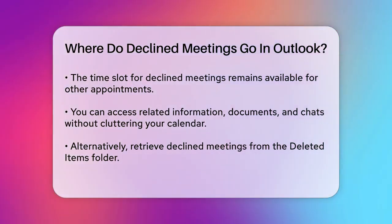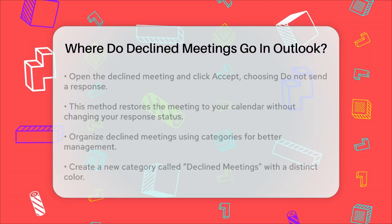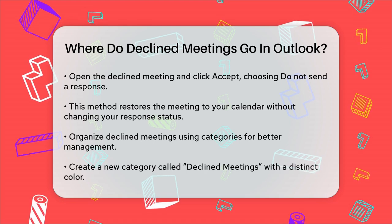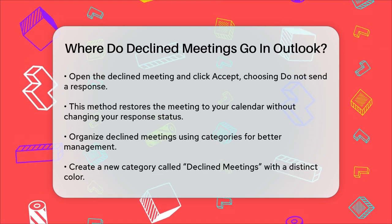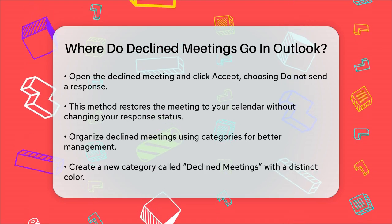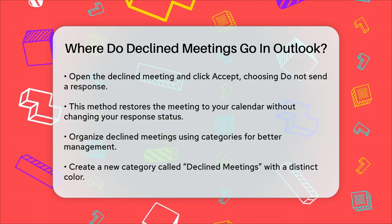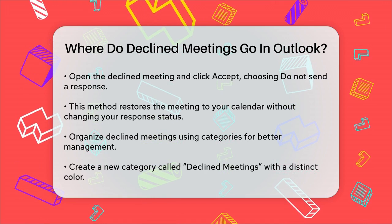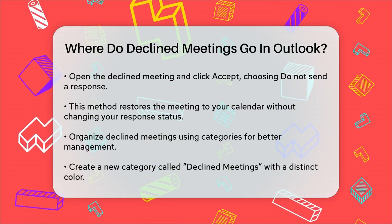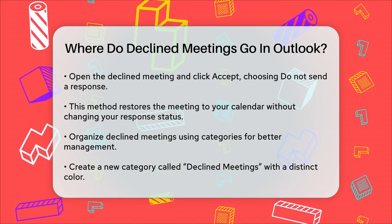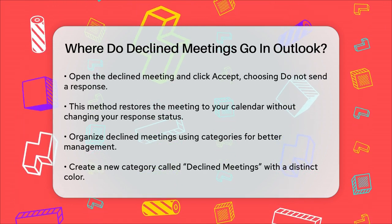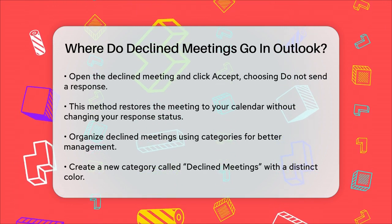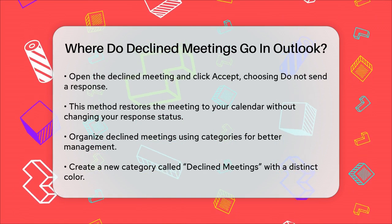To organize these declined meetings effectively, you can use categories. Create a new category called Declined Meetings with a distinct color and assign it to the declined meetings. This makes them easy to spot and manage on your calendar.